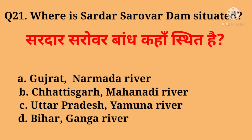Question number twenty-one: Where is Sardar Sarovar Dam situated? Right answer is Gujarat, on the Narmada River.